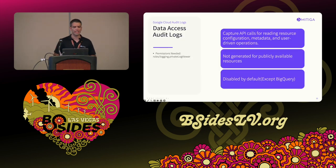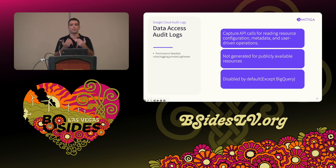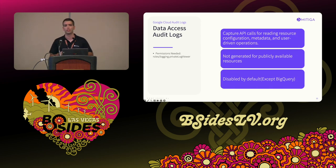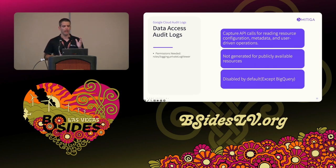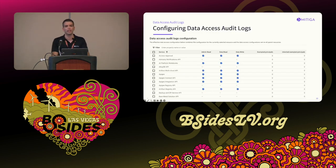Data access audit logs capture actions where someone reads the metadata of your resources or performs data actions — such as writing or reading data. These logs are not generated by default; you need to explicitly enable them for each service, and they have a cost penalty. They are enabled by default specifically for BigQuery. Also important: if your resources are publicly available, you won't get any data access logs from those resources — we'll see how that affects us later.